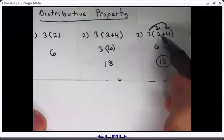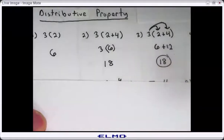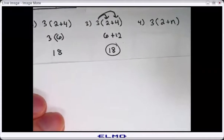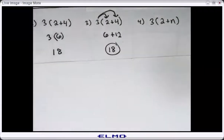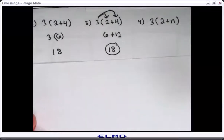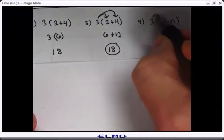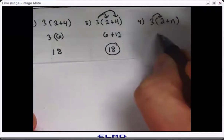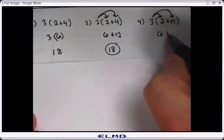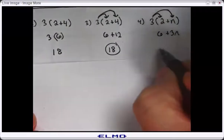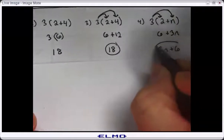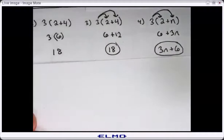There is no reason to do distributive property when you have a numerical expression inside of the grouping. However, when you have an algebraic expression inside of the grouping, there is a reason to do it because I can't do the grouping. Two plus n — those are not like terms, I cannot combine them. So I have to do the distributive property. Three times two is six, three times n is three n. We should always write our answer where we end with the constant — three n plus six is your answer.